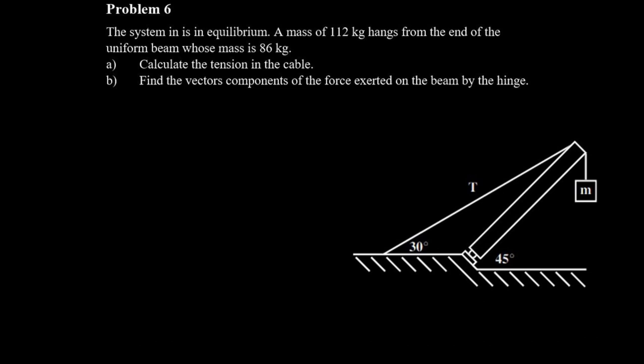That uniform beam just tells us that the weight of the beam is going to act right in the center. For part A they want us to calculate the tension in the cable and for part B they want us to find the vector components of the force exerted on the beam by the hinge.